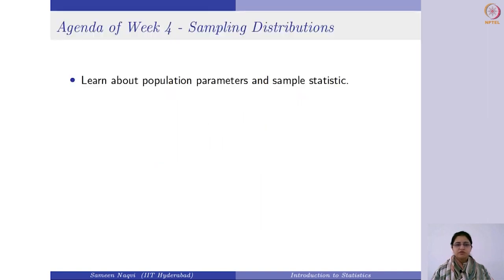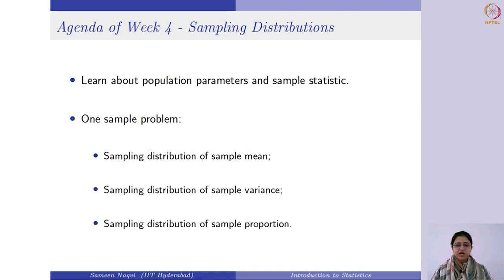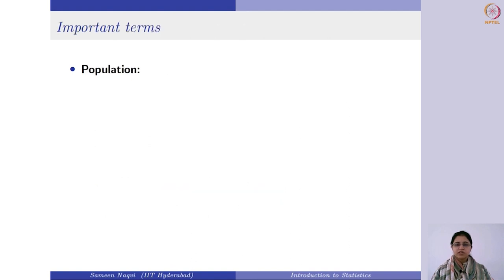First, we are going to learn about some important terms which include population parameters and sample statistic. Then we will consider a situation where we will be drawing a single sample from a population, and based on the sample statistic, we would be finding out the sampling distribution of the sample mean, sample variance, and sample proportion. Mean and variance are used for numerical variables, and proportion is used when you have a categorical variable.